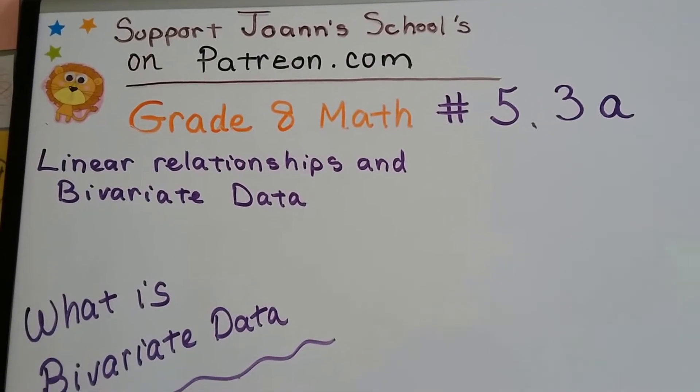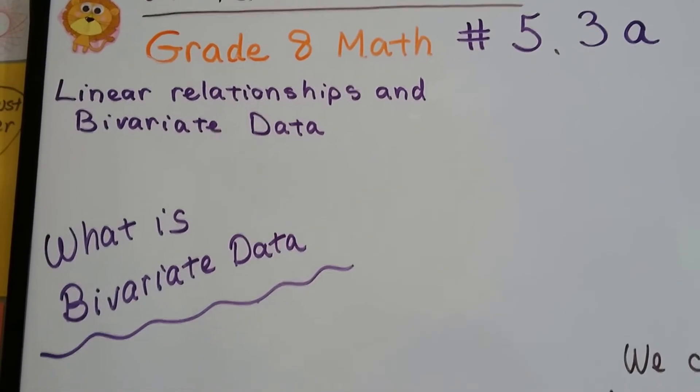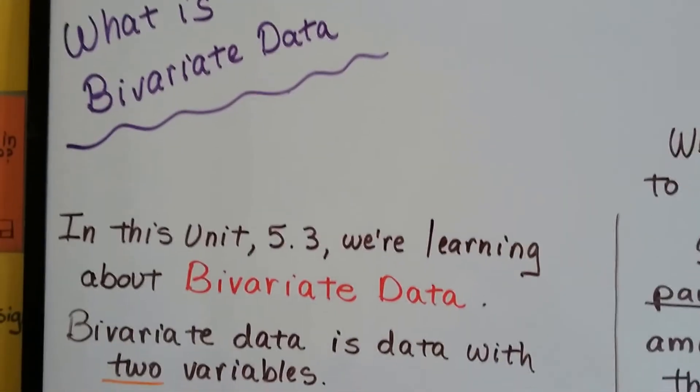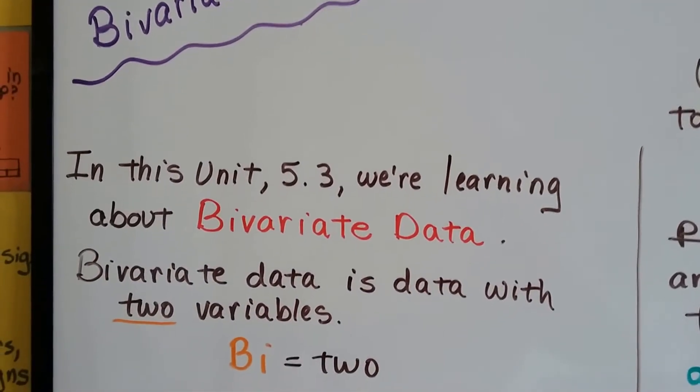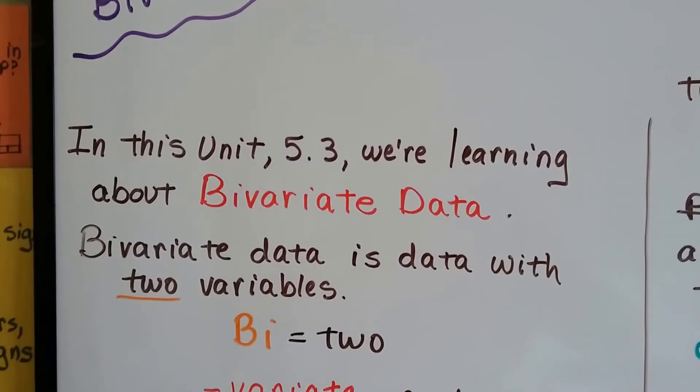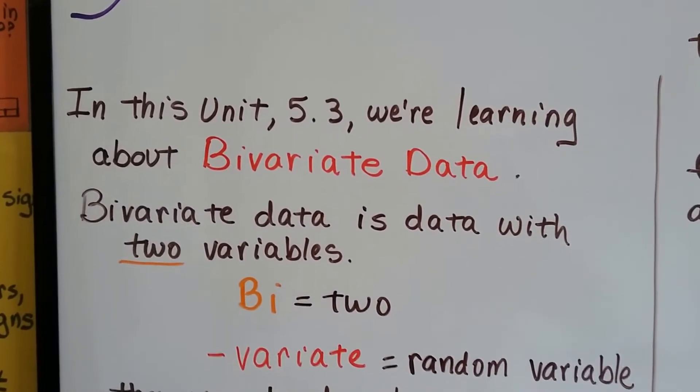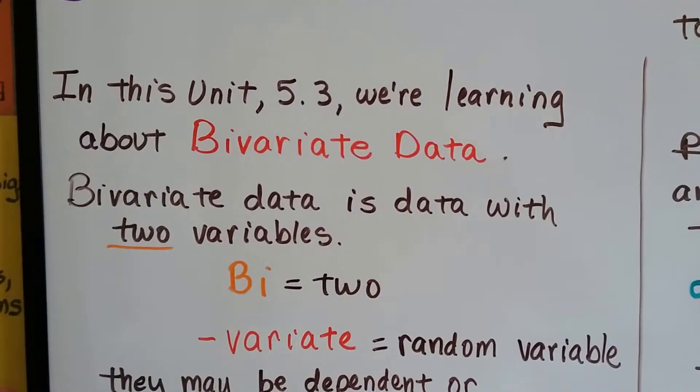Grade 8 math number 5.3a, what is bivariate data? Well in this unit 5.3 we're learning about bivariate data. And bivariate data is data with two variables. Bi means two.